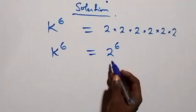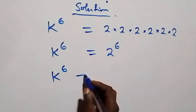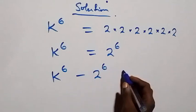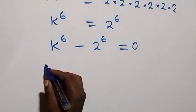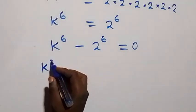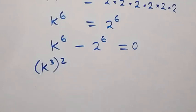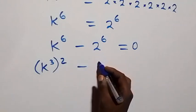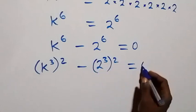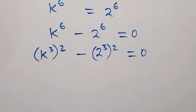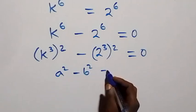Let's take 2 raised to power 6 to the left hand side, and we have k raised to power 6 minus 2 raised to power 6 equals 0. From here we can rewrite this as k raised to power 3, raised to power 2, from the law of indices — 2 times 3 is still 6 — then minus 2 raised to power 3, raised to power 2, equals 0.